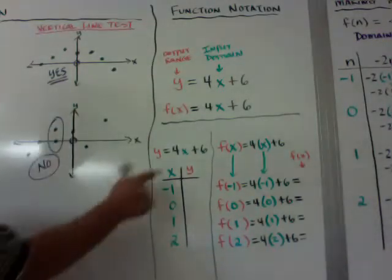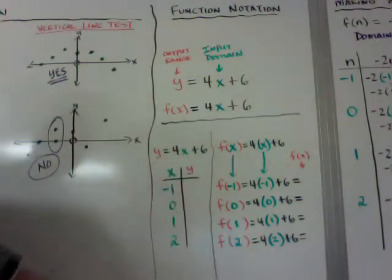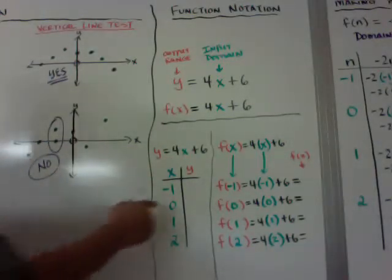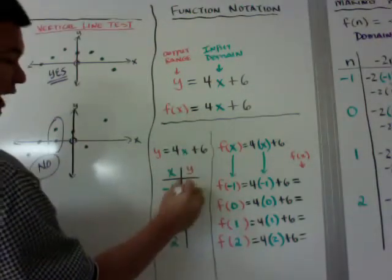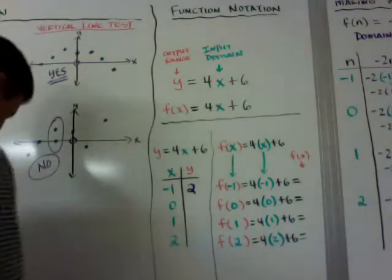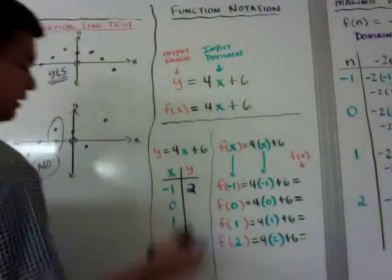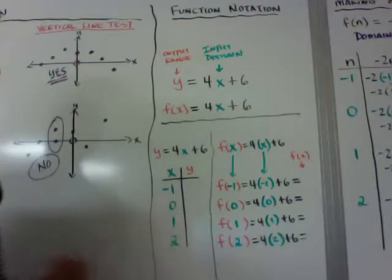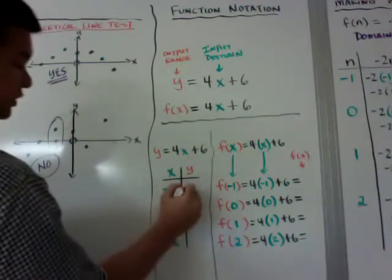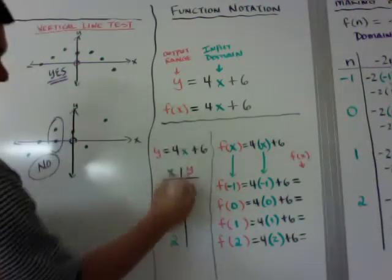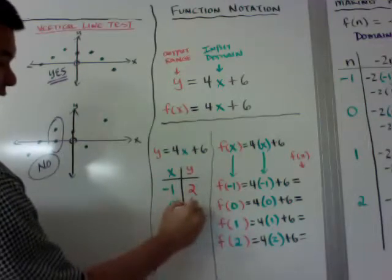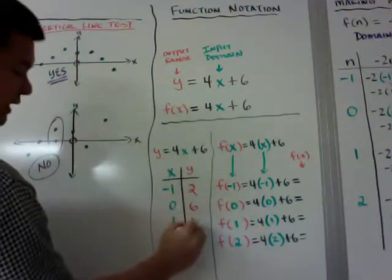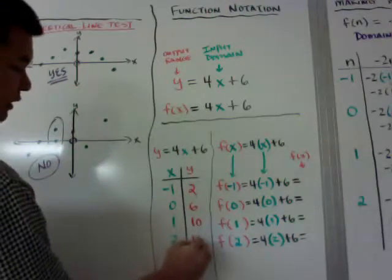In an xy table for y = 4x + 6: if x = -1, you get -4 + 6 = 2. If x = 0, you get 0 + 6 = 6. If x = 1, you get 4 + 6 = 10. And if x = 2, you get 8 + 6 = 14.